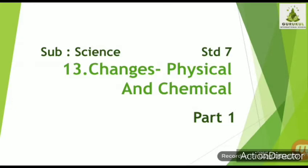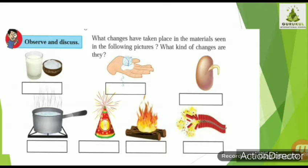What do we mean by changes? To understand that, first let us understand the meaning of physical and chemical. When there is a change in the structure and state of the substance that surrounds us, there are changes caused in the surroundings as well. There are physical, chemical, and biological changes occurring around us. Some changes are natural while some are man-made.